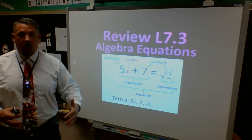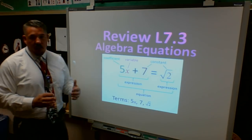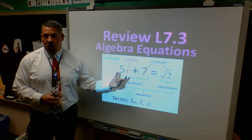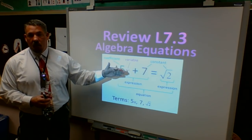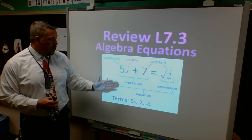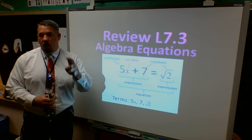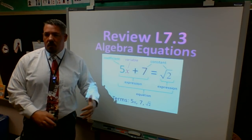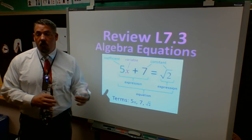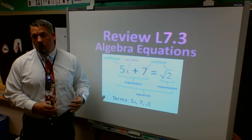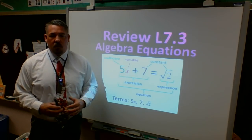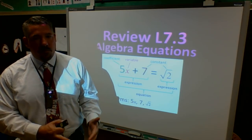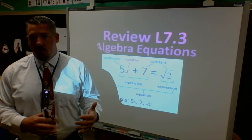The key terms I need to understand are variable and coefficient. My variable is my letter - anytime I have it in my problem. My coefficient is a number that goes with that variable; they're connected side by side. If it's a number by itself, then that's a constant. There are times I have to know what to do with that constant in order to solve for my answer.